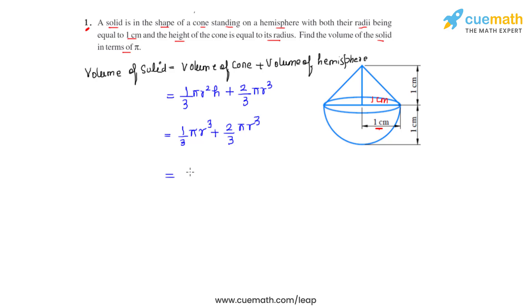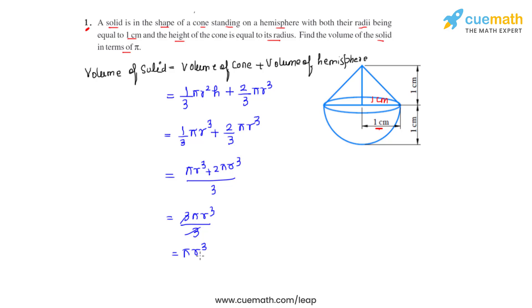That gives us (πr³ + 2πr³) divided by 3, which on simplification gives us 3πr³ divided by 3. The 3s cancel, and we are left with πr³.